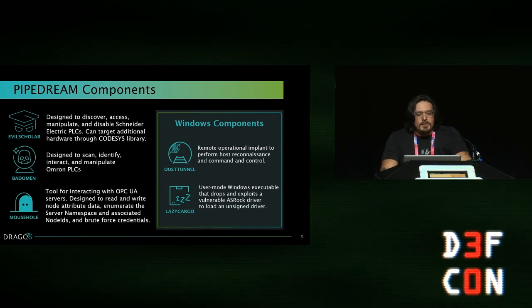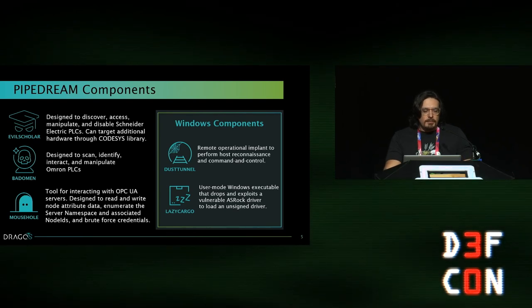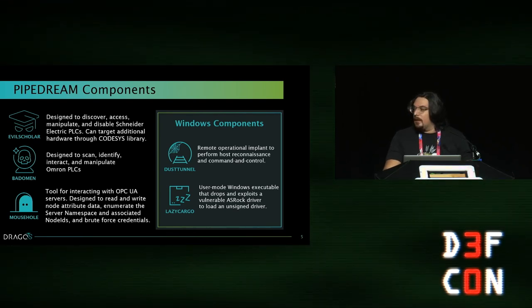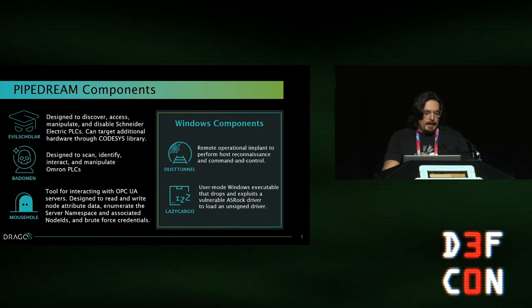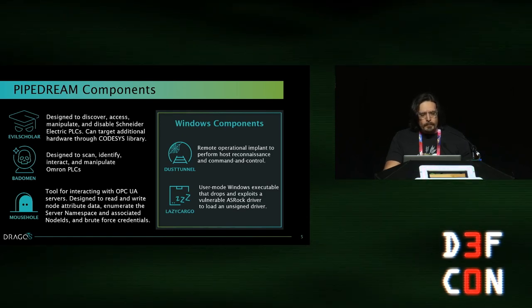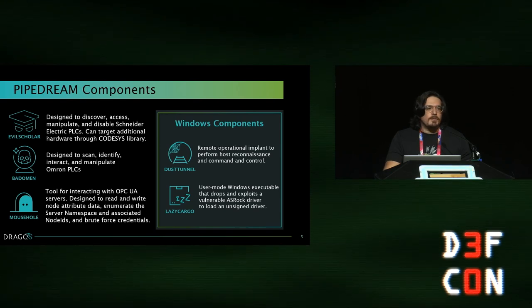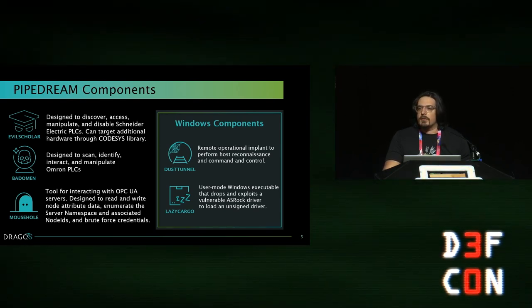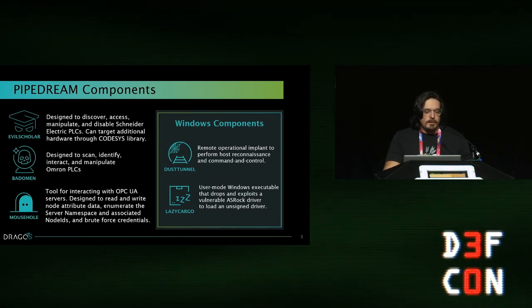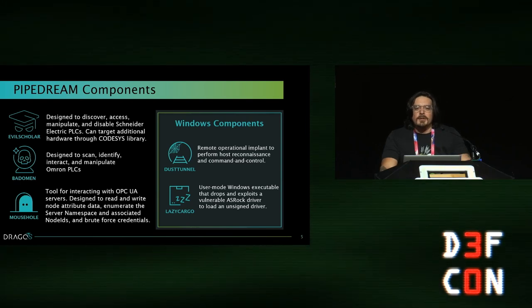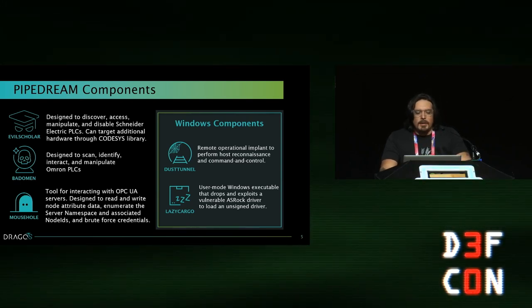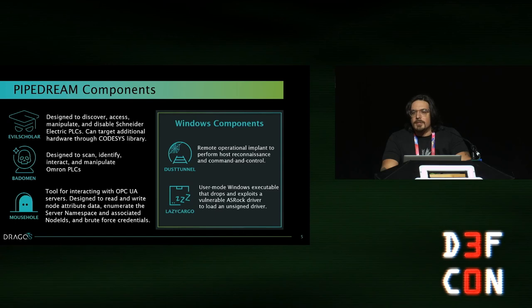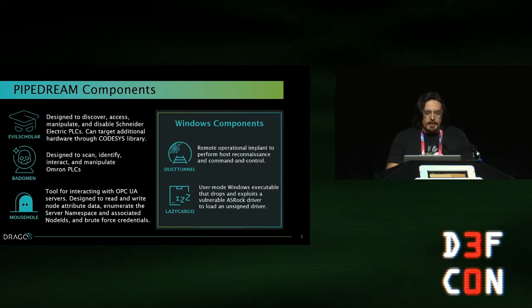There are five components in total. We're focusing on three: Evil Scholar, Bad Omen, and Mousehole. All three are remotely interactive command-line utilities for manipulating equipment. Evil Scholar is a CODASYS version 3 attack tool initially targeting Schneider Electric controllers. Bad Omen is a similar utility targeting Omron controllers. And Mousehole is a tool for interacting with OPC UA servers.